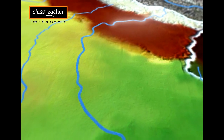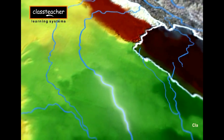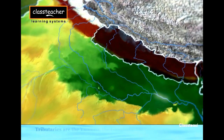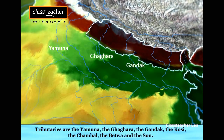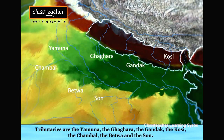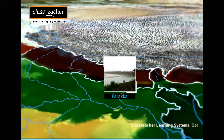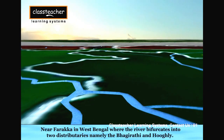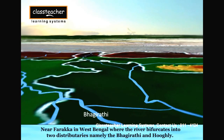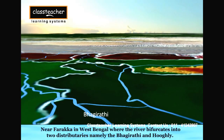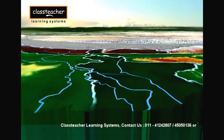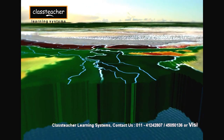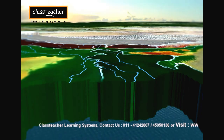At Haridwar, the Ganga emerges from the mountains onto the plains. Then it is joined by many tributaries such as the Yamuna, the Ghagra, the Gandak, the Kosi, the Chambal, the Betwa, and the Son. It flows eastward till Farakka in West Bengal, where the river bifurcates into two tributaries: the Bhagirathi, which flows southwards into Bangladesh and is joined by the Brahmaputra river, known as Meghna, and the Bhagirathi which flows through the deltaic plains to the Bay of Bengal.